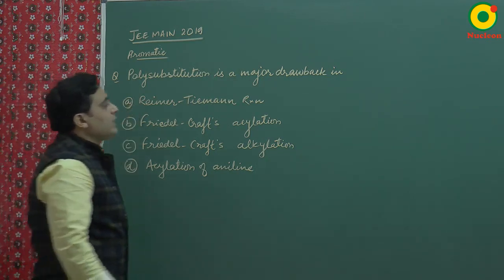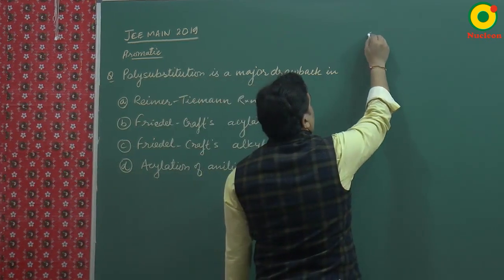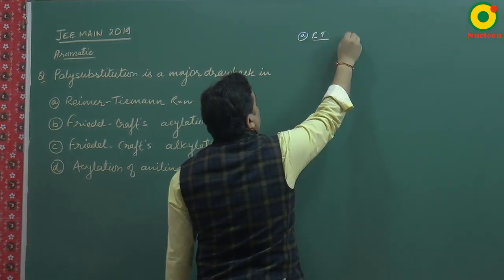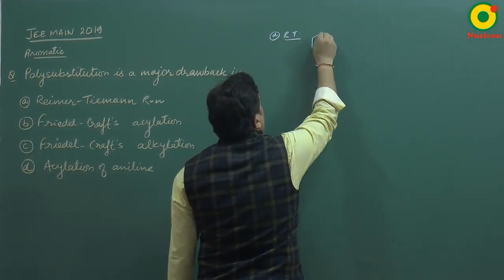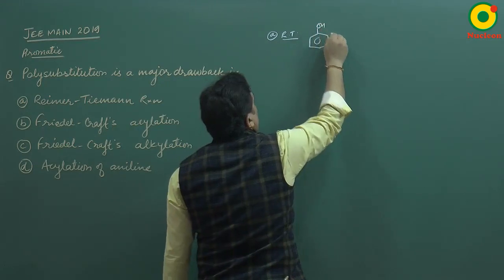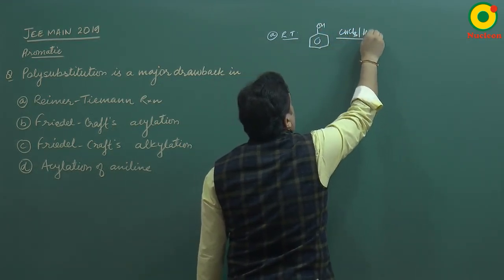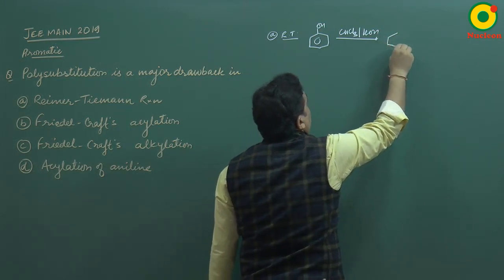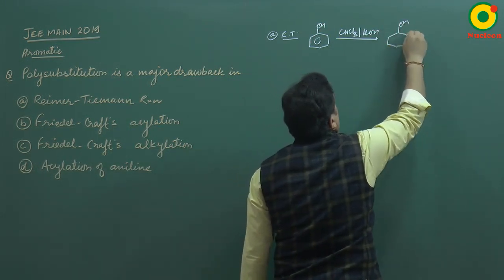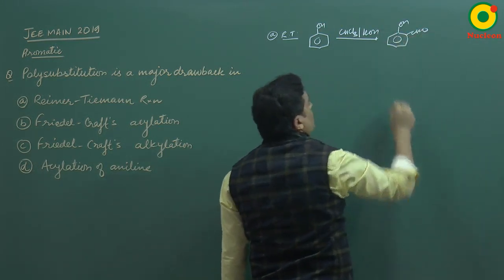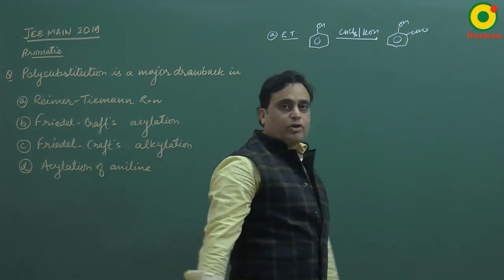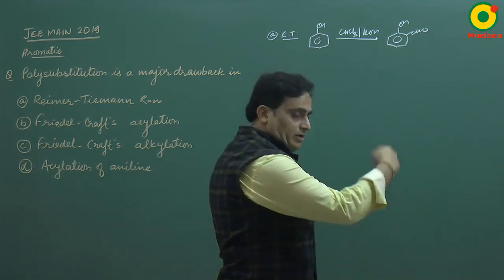What is the Riemann-Tiemann? Option A, the RT Riemann-Tiemann reaction: you have phenol reacting with chloroform in the presence of KOH, then it becomes salicylaldehyde. This is the product, salicylaldehyde.